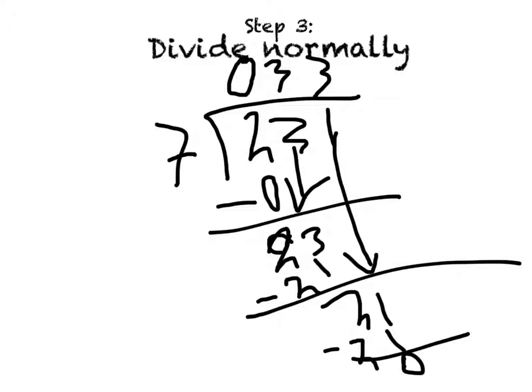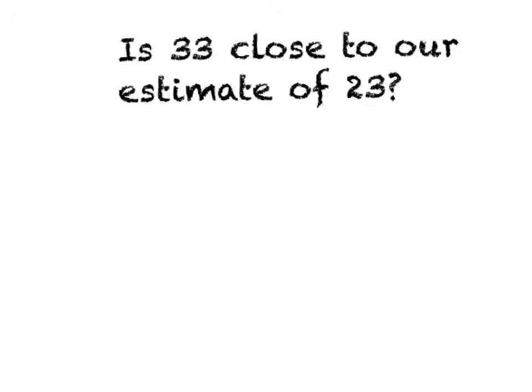So now we know 23.1 divided by 0.7 is 33. Is 33 close to our estimate of 23? Yes, 33 is close to 23, so our answer is reasonable.